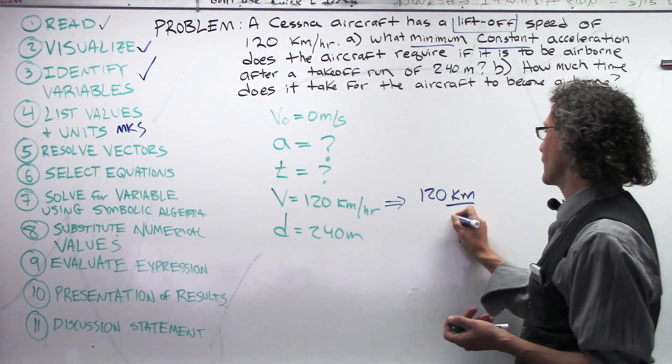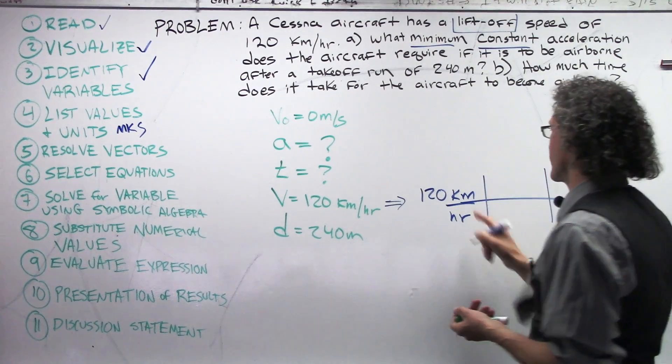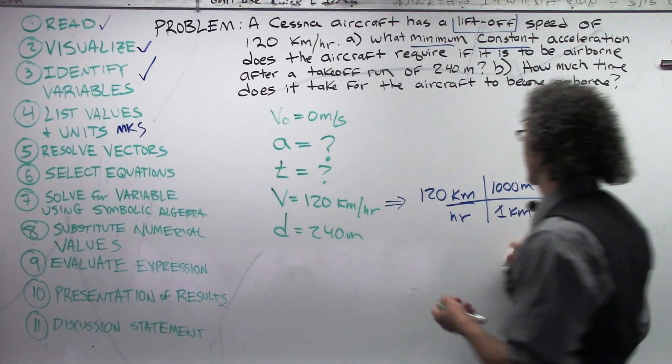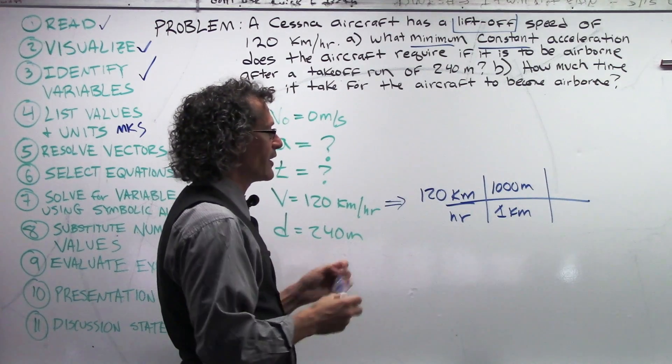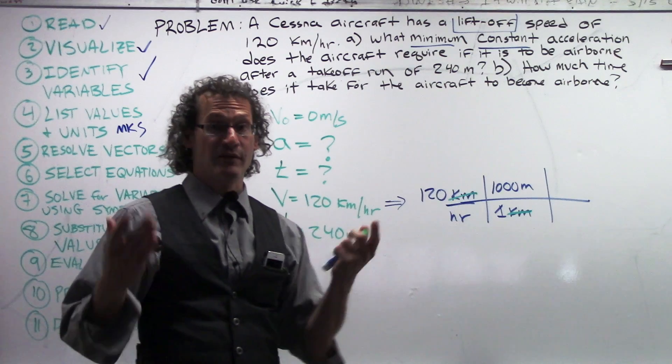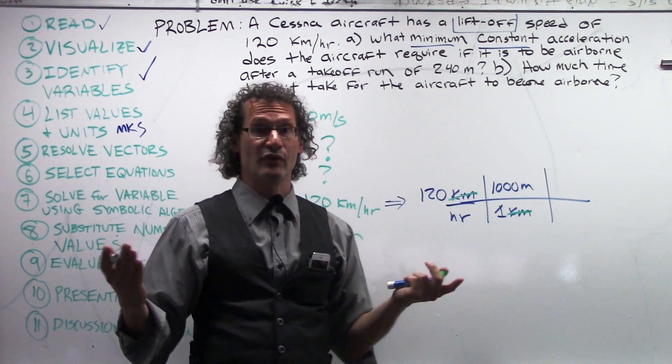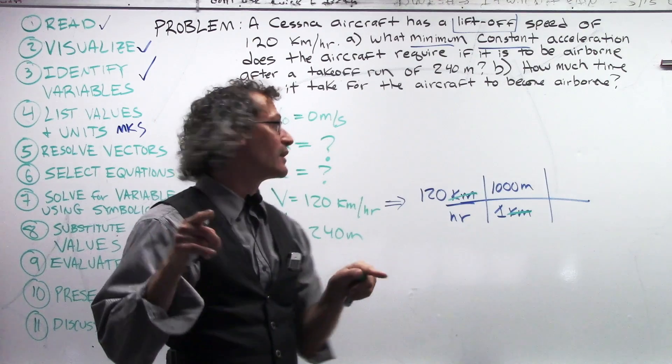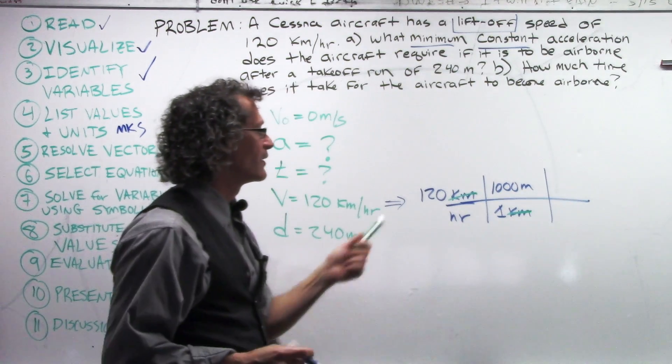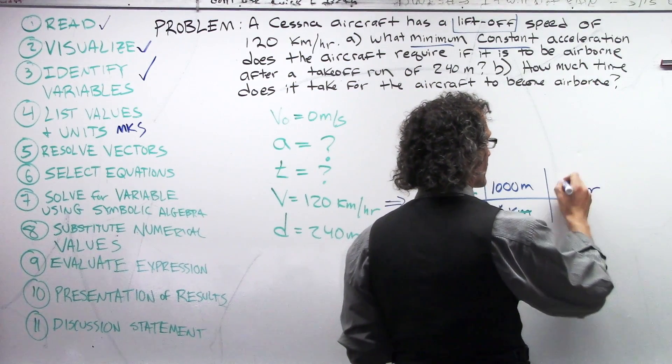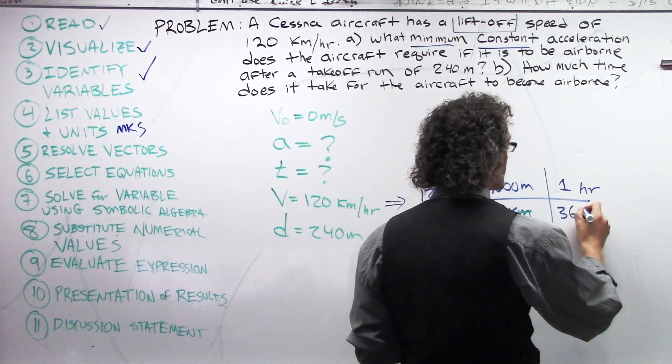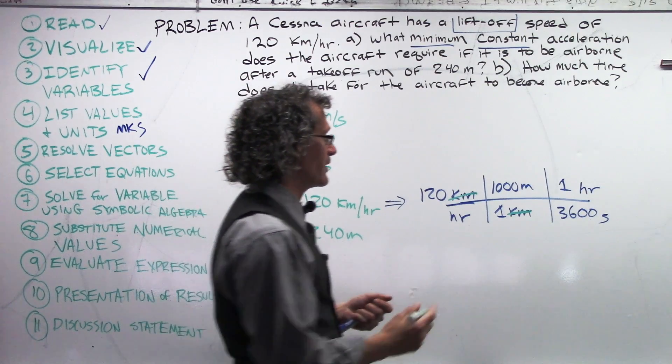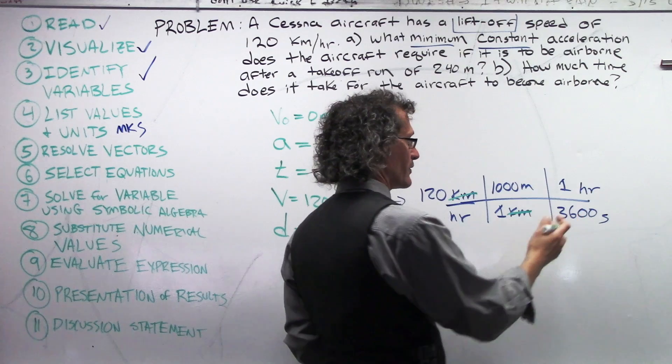120 kilometers per hour. Setting up the train tracks like this. Let's deal with the kilometers first. One kilometer, it's the same thing as 1,000 meters. Therefore, we get cancellation of the kilometers leaving behind meters. The other thing is that we have hours. And one hour is the same thing as 3,600 seconds. I could go to minutes. I don't really need to do that. I know this is the equivalent here. Equivalent is 1 hour to 3,600 seconds. The hours cancel. And I've got my meters in my seconds.